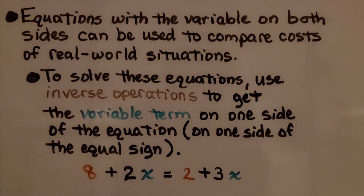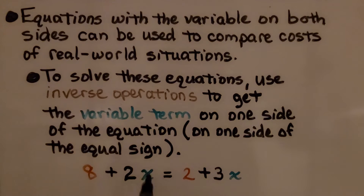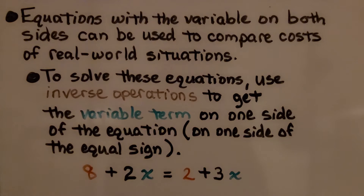Equations with the variable on both sides can be used to compare costs of real-world situations. We have a variable x here, and it's also on the other side. We have the variable on both sides of the equation. To solve these equations, we use inverse operations to get the variable term to one side of the equal sign.